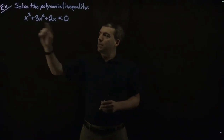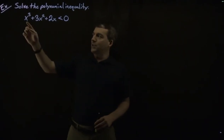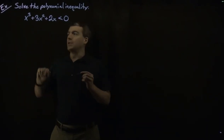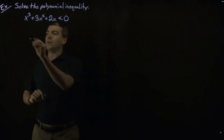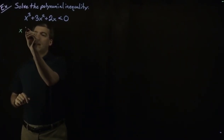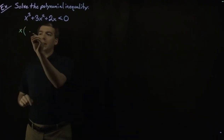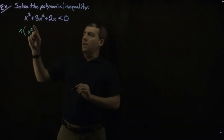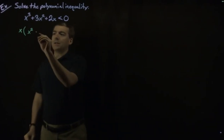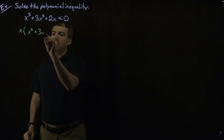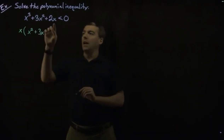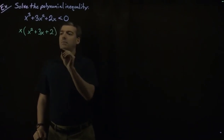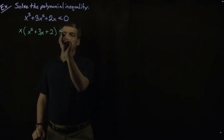This polynomial can be factored. Each term has a common factor of x, so we can pull that out first. We'll take an x out of the first term, leaving x squared, then an x out of 3x squared gives plus 3x, and an x out of 2 gives plus 2, all less than 0.